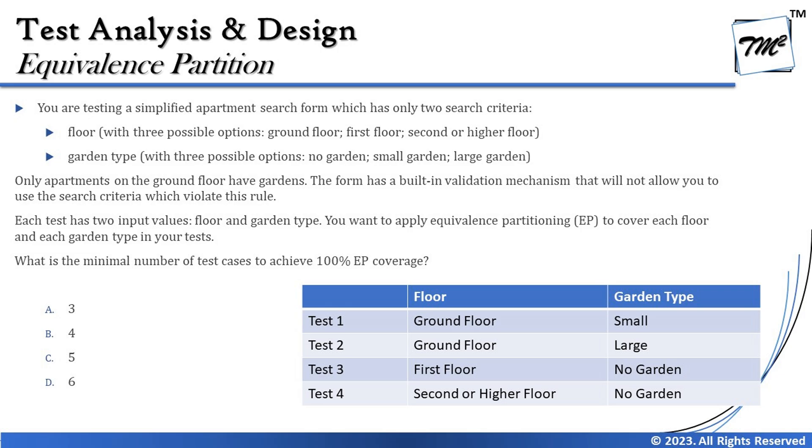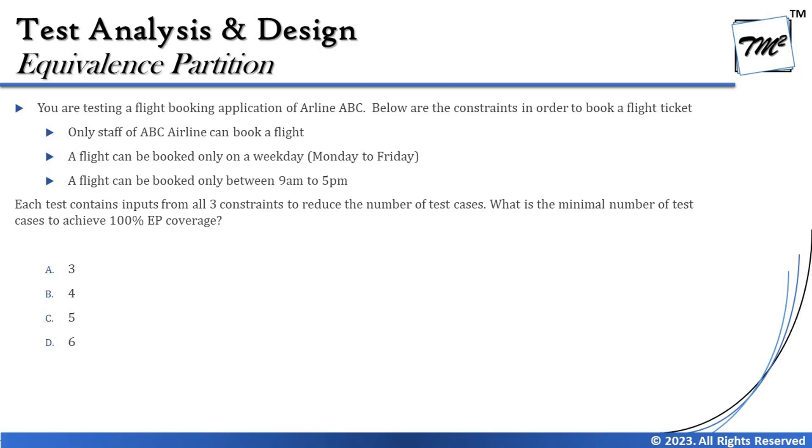So the answer is four — option B — as the minimum number of test cases for 100% equivalence partition coverage. I hope you got a clear understanding of this scenario. For better confidence, we'll take one more example, this time with three inputs, to see how the test cases change.